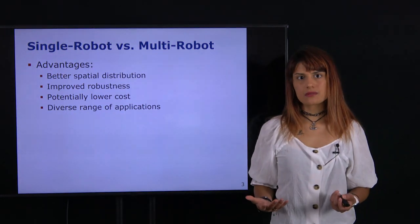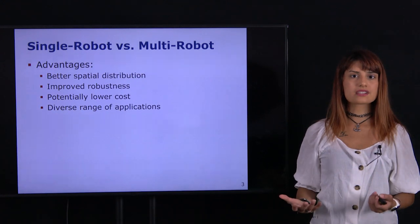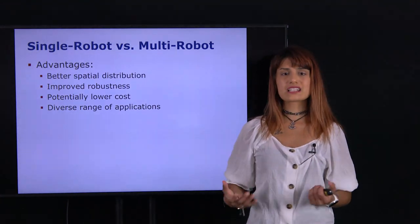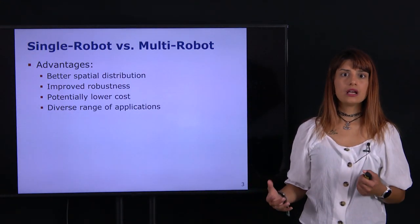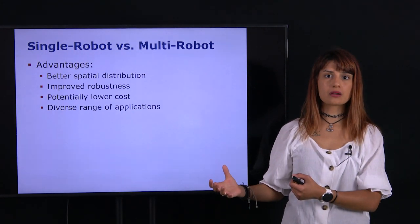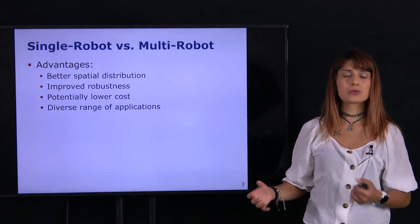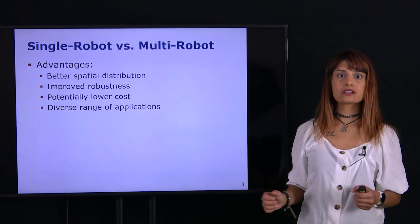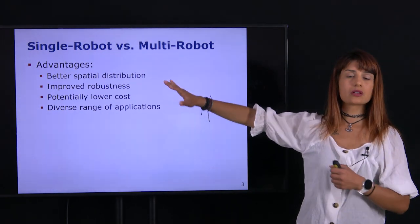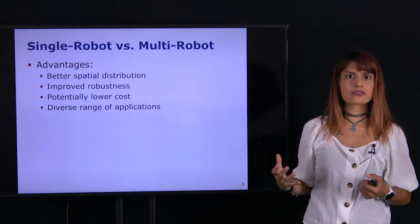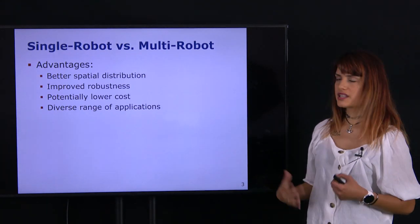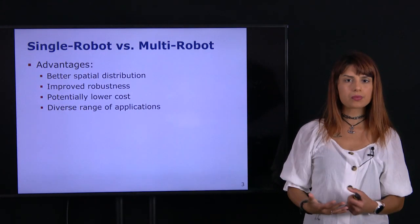Why would we want to use a multi-robot system as opposed to a single robot system? One advantage is spatial distribution — if we use multiple robots they can spread out over the space more effectively. This is similar to informative planning with sensors: if robots are positioned effectively we can get significantly more information than with just one robot, even a very fast-moving one. Spatial distribution makes a significant difference.